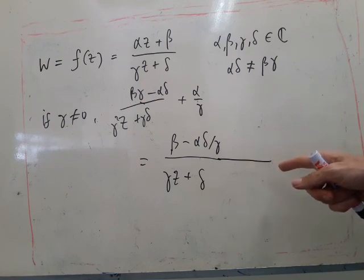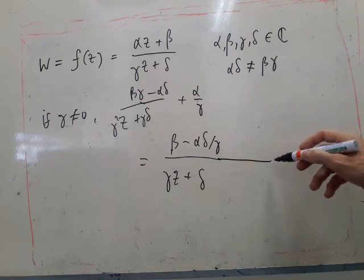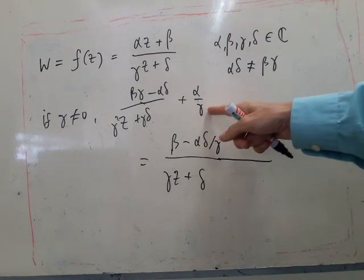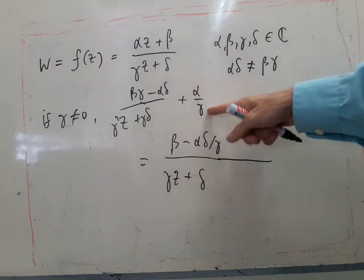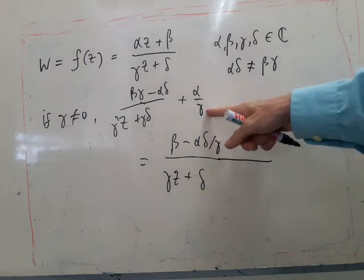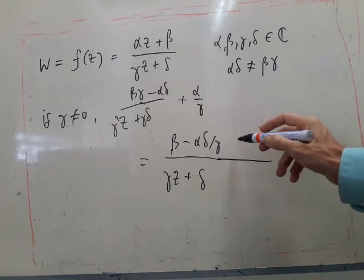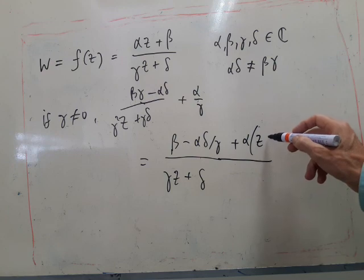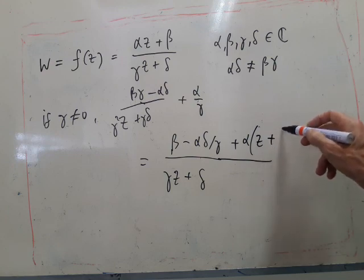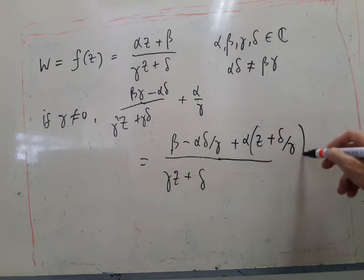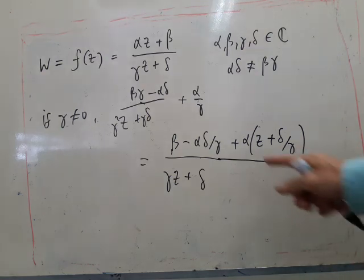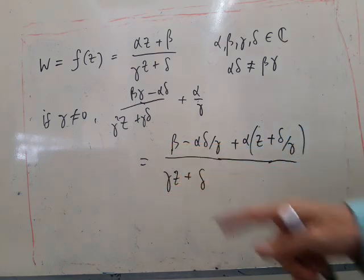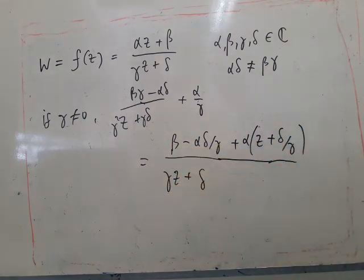To do that on the top, I multiply top and bottom by z plus delta over gamma. And sure enough, this cancels this, and I've got alpha z plus beta over gamma z plus delta.